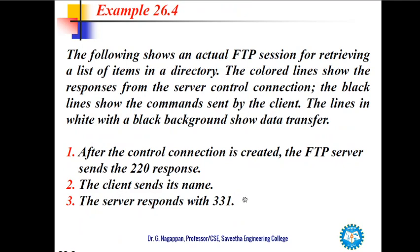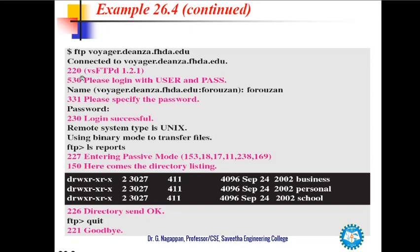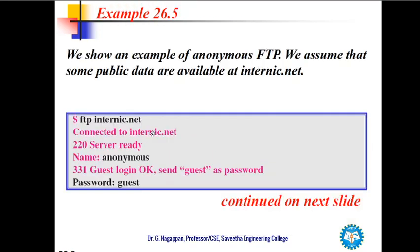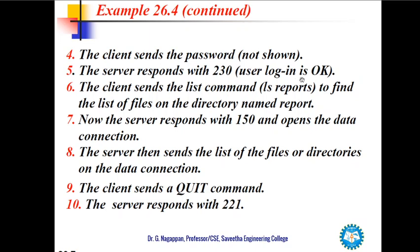The client sends its username and the server responds with 331. Code 530 says 'please login with user and password.' When we specify the username, we get 331 'please specify the password.' The password is entered but not shown on screen. Once the correct password is entered, 230 is shown indicating the login is successful.